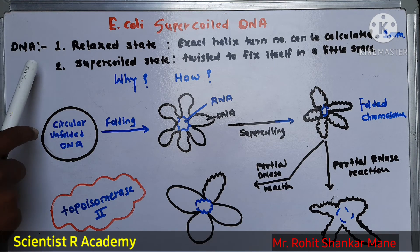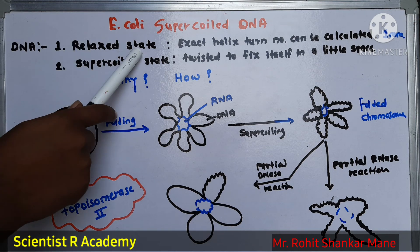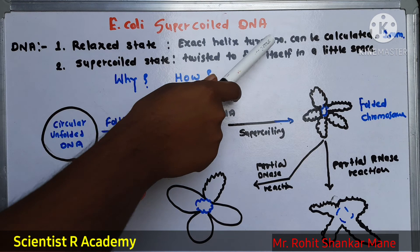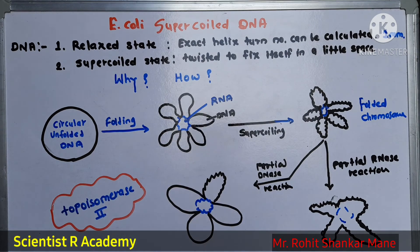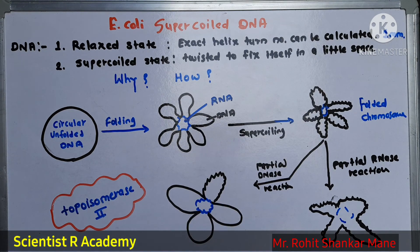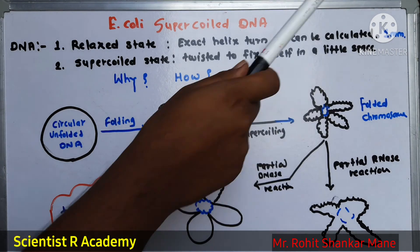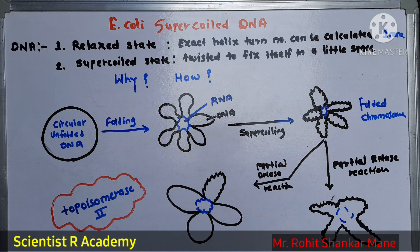DNA is in two forms. First is the relaxed state, and the other is the supercoiled state. The relaxed state means the exact helix-turn number of base pairs can be calculated — this is called the relaxed state of DNA, and its size is more than 1 mm. The supercoiled state of DNA means it is twisted to fix itself in a little space, such as inside bacteria.